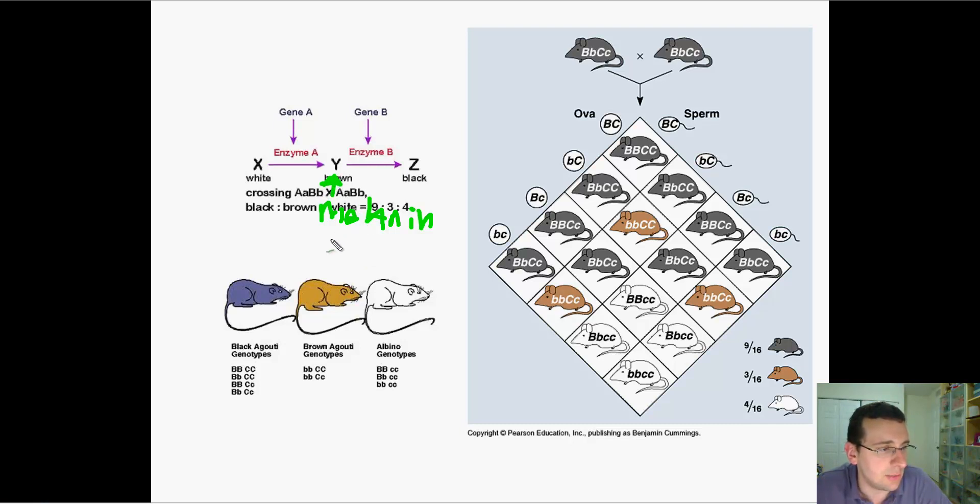Now, this gene will tell you how much melanin to make. So if this gene says make a lot of melanin, you're going to be black. But if the gene says do not make a lot of melanin, you're going to be white. And so this gene controls the amount of melanin in your skin cells or your hair cells or your eyes.